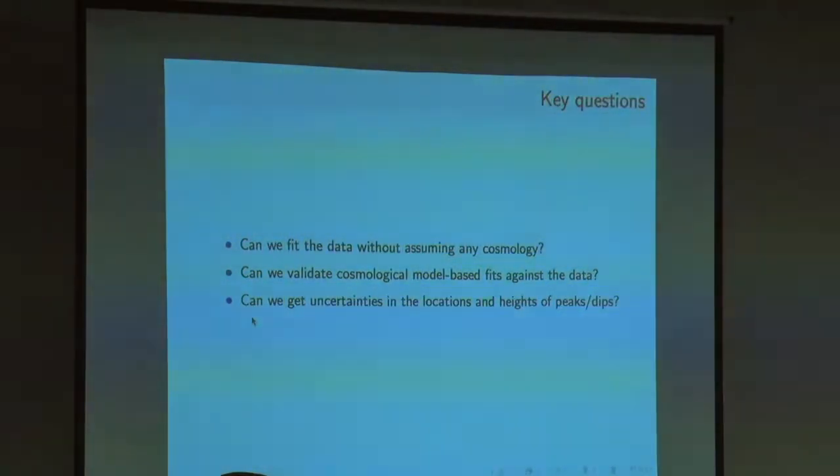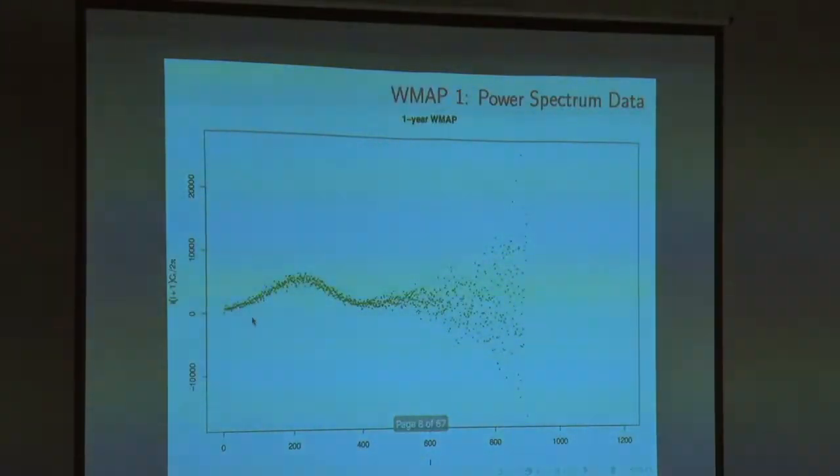Of course, cosmologists have their own models. There is a whole deal of theory behind these phenomena. They have models for this power spectrum. Can we, without resorting to these models, look at the data and somehow rank the models? Make the conclusion more quantitative. A more concrete question is: the locations and heights of the peaks have certain relevance. How do we find the uncertainties on these things?